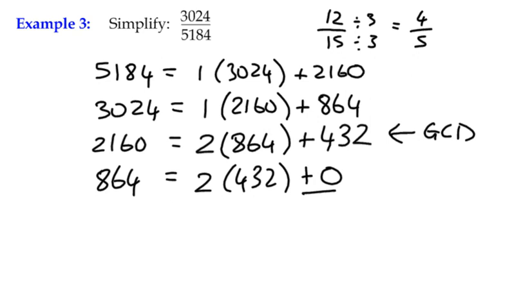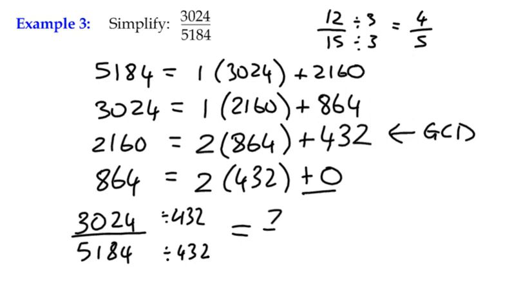So that might be all you're asked to find, but in this case, we're asked to actually simplify a fraction. So in order to do that, we're effectively going to divide by, what was the number? 432, which is going to give us, as a simplified fraction, 7 on the numerator, 12 on the denominator. And there we go. We've simplified it using our greatest common divisor.